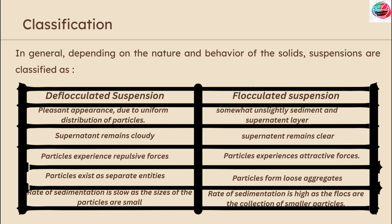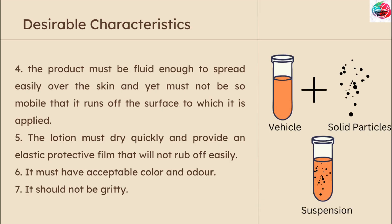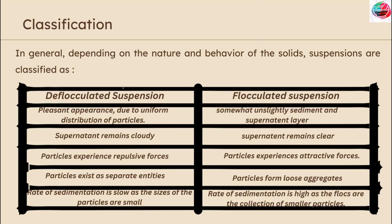Now, what is the classification of suspension? Based on the proportion of solids, suspensions are classified as dilute suspension, which generally contains 2 to 10 percent of solids, and concentrated suspension, which contains 50 percent and greater solids. In general, depending on the nature and behavior of the solids, suspensions are further classified.